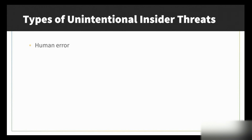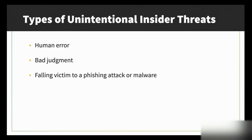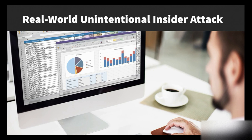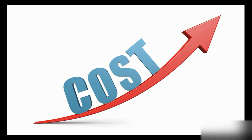Unintentional insider threats include human error, bad judgment, falling victim to phishing or malware, and unintentionally aiding an attacker. An example: an employee emailed a company spreadsheet to his wife's personal account for help, not realizing it had hidden columns with sensitive employee data — turning a simple email into a major security breach reported to the state's attorney general. The Ponemon Institute reports that the average cost from insider threats in North American companies is millions of dollars, and the cost rises every year.